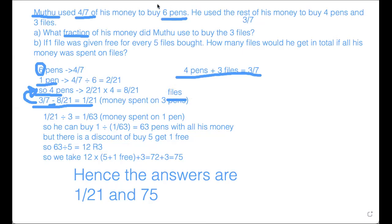So we know that since 1 over 21 was spent on 3 files, then the amount of money spent on 1 file is actually 1 over 63, which means that he can buy 1 divided by 1 over 63 files equals 63 files with all his money. But since it says here that if 1 file was given free for every 5 files bought,